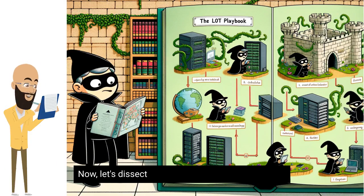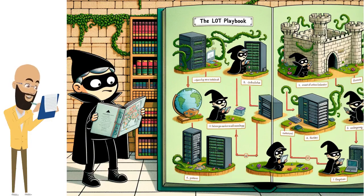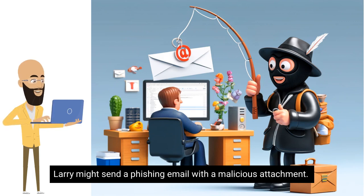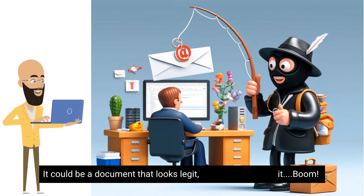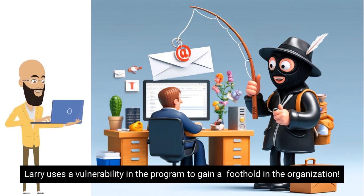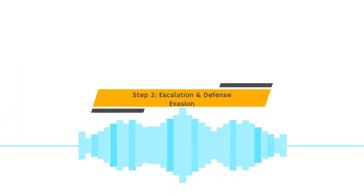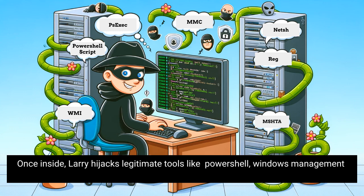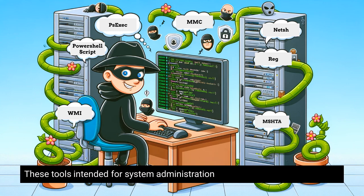Now let's dissect a typical LOTL attack. Larry might send a phishing email with a malicious attachment — a document that looks legit. But once you open it, boom! Larry uses a vulnerability in the program to gain a foothold in the organization. Once inside, Larry hijacks legitimate tools like PowerShell, Windows Management Instrumentation (WMI), or PSExec. These tools, intended for system administration, become potent attack vectors. Imagine a janitor with a master key to every room.